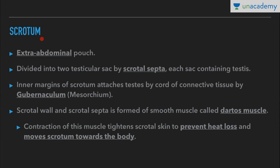Scrotum is a supporting reproductive structure in males. It is an extra-abdominal pouch. There is a scrotal septa which divides it into two testicular sacs, and each testicular sac contains one testis.